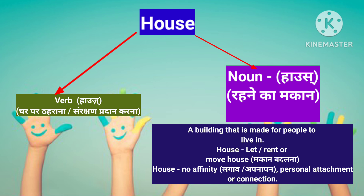House — यह एक noun भी है और verb भी है। जब 'house' का प्रयोग verb के रूप में किया जाता है तो इसका उच्चारण होता है 'house' और इसका Hindi meaning होता है — घर पर ठहराना या संरक्षण प्रदान करना। जब 'house' का प्रयोग noun के रूप में किया जाता है तो इसका Hindi meaning होता है — रहने का मकान। In English, you can say: a building that is made for people to live in — this is called a house.